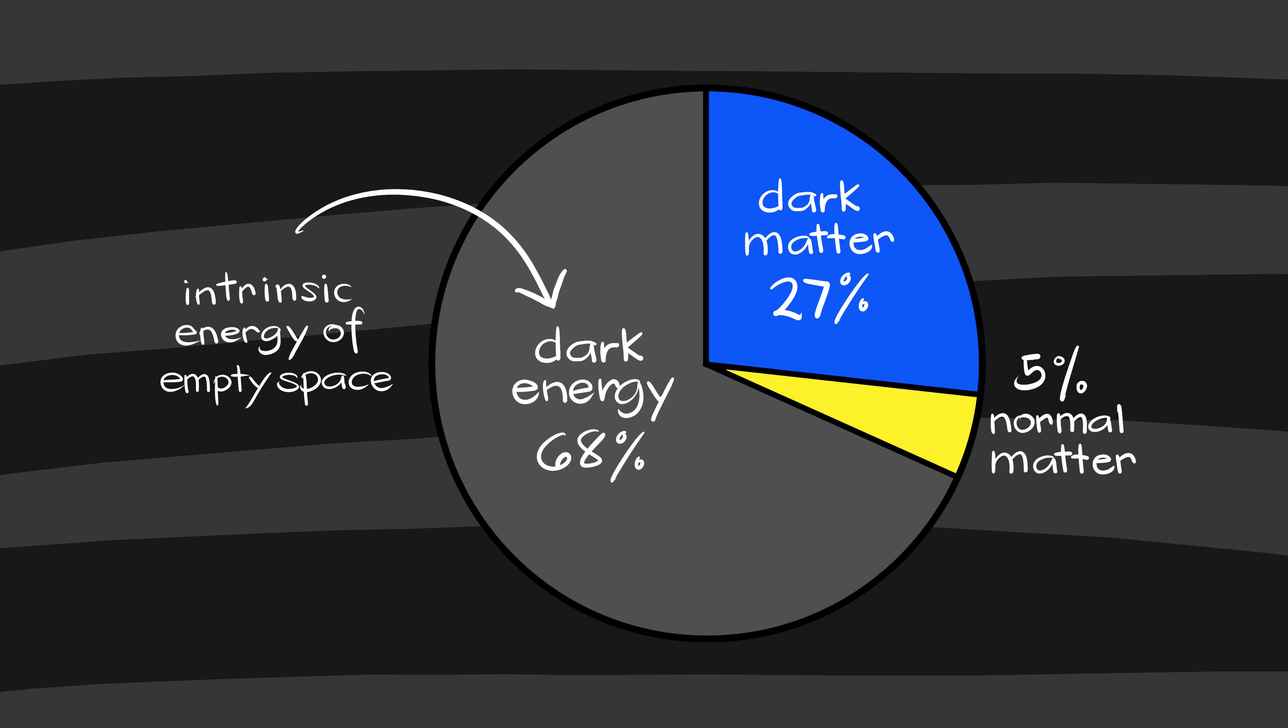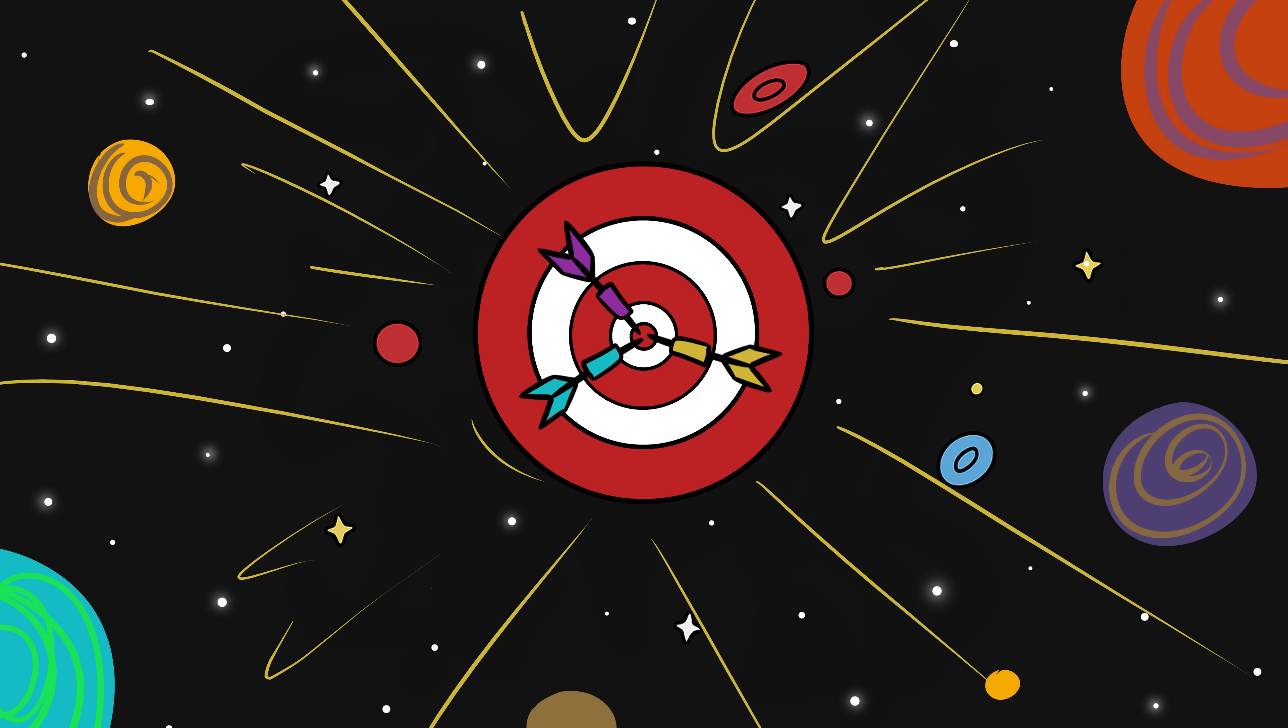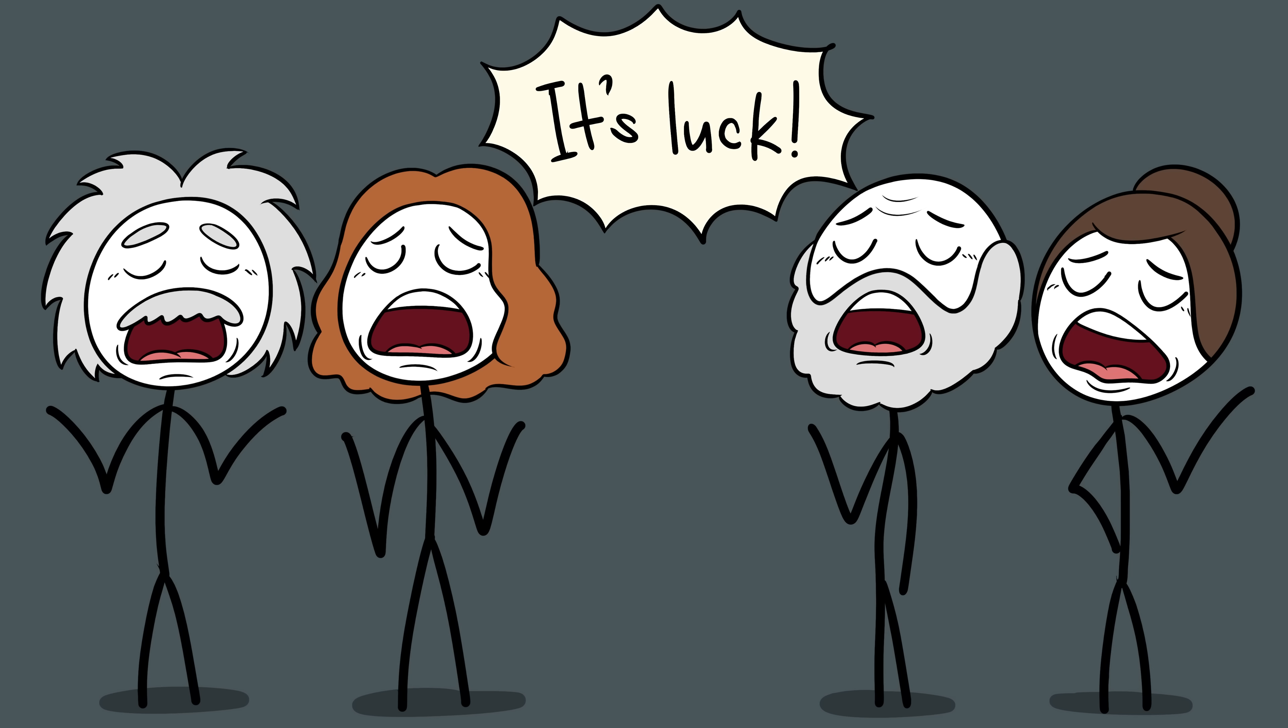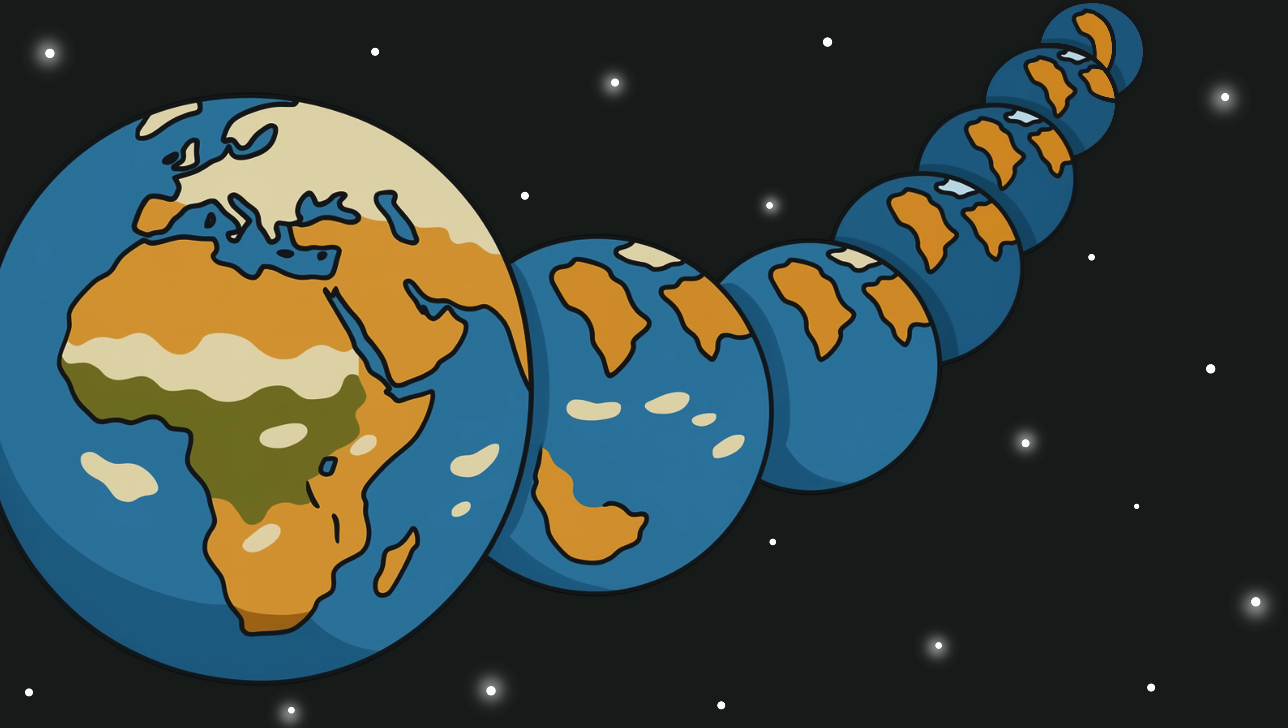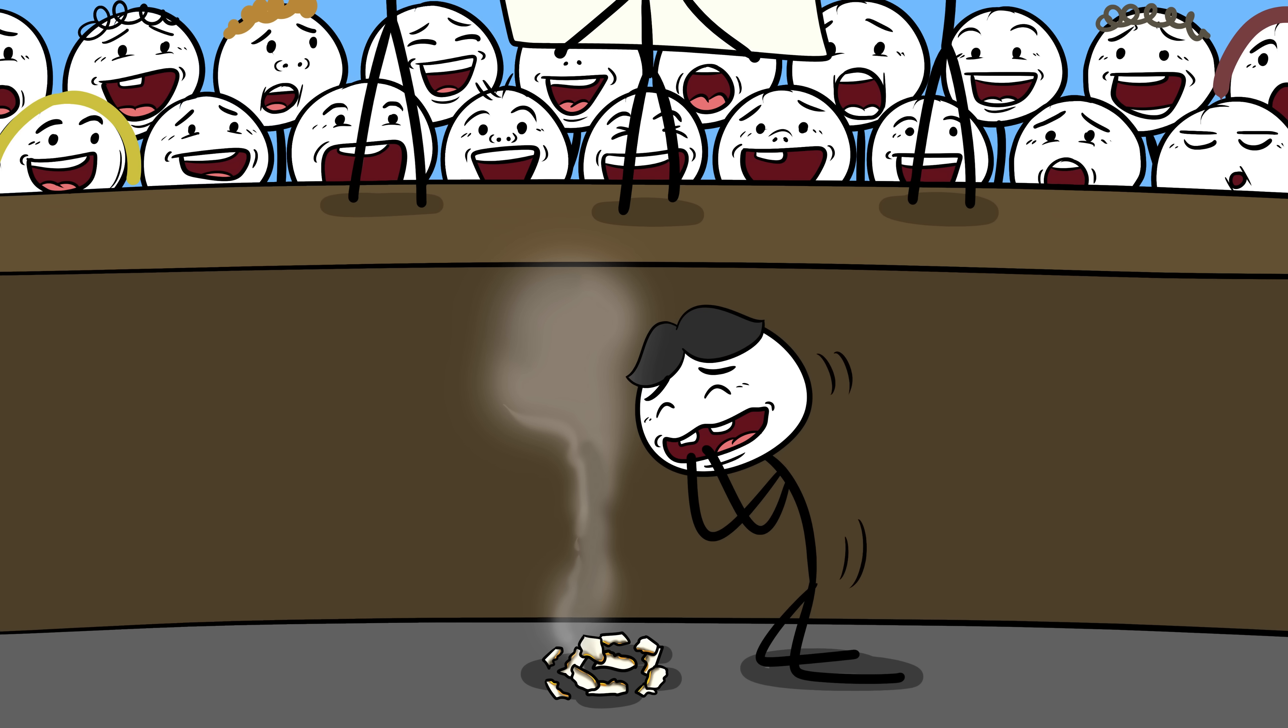The cosmological constant, the energy of empty space, is fine-tuned to 120 decimal places. That's not a coincidence. That's like throwing darts blindfolded across the galaxy and hitting the bullseye every time. So how did we end up in a universe that's so perfectly balanced for life? Some scientists say it's luck. Others propose the multiverse theory, that infinite universes exist, each with different laws of physics, and we just happen to live in the one that works.